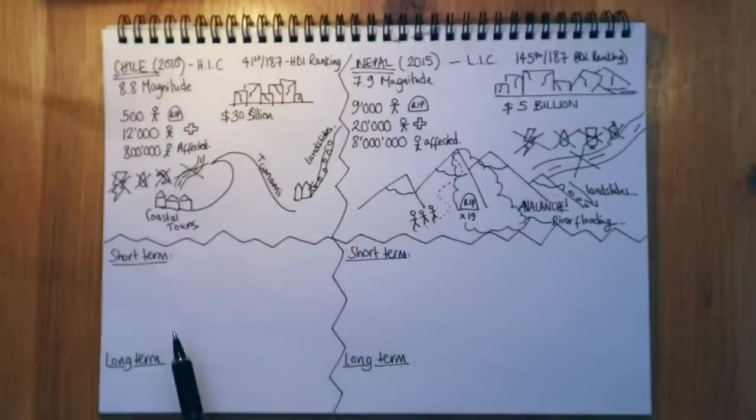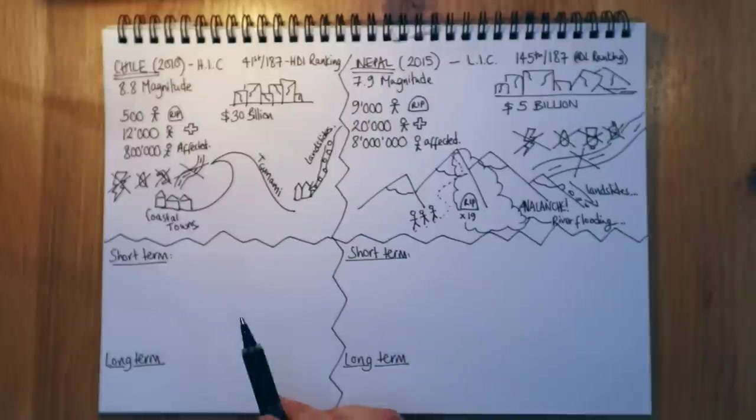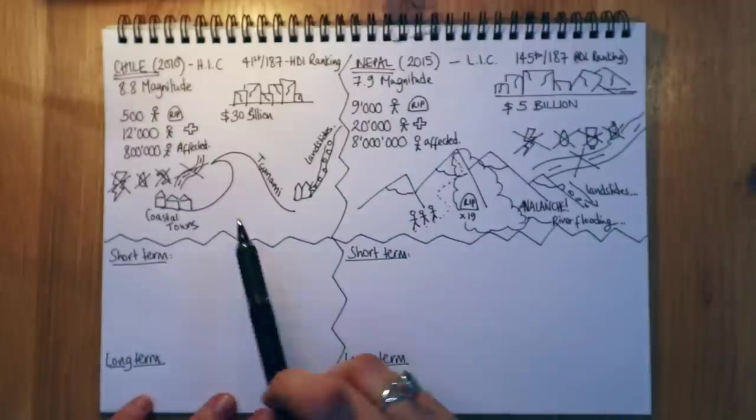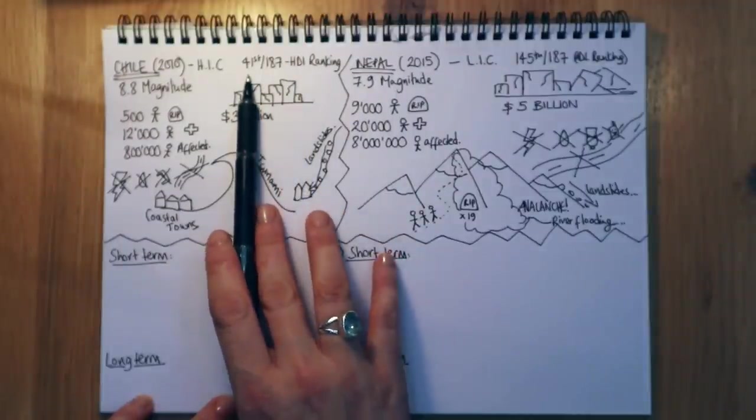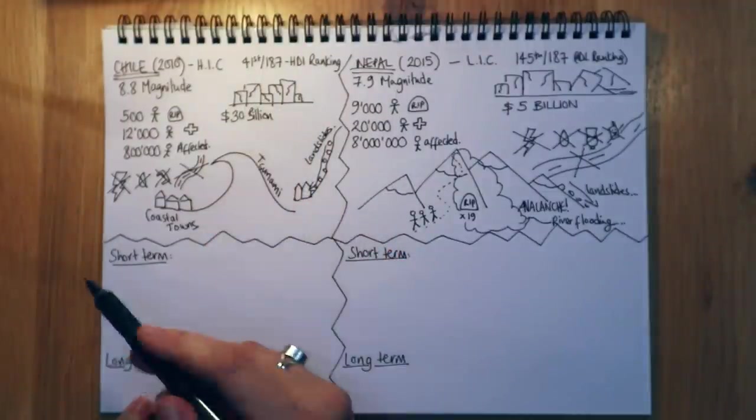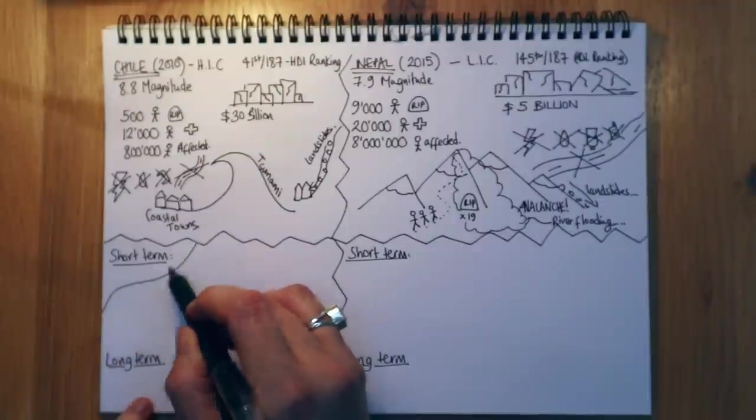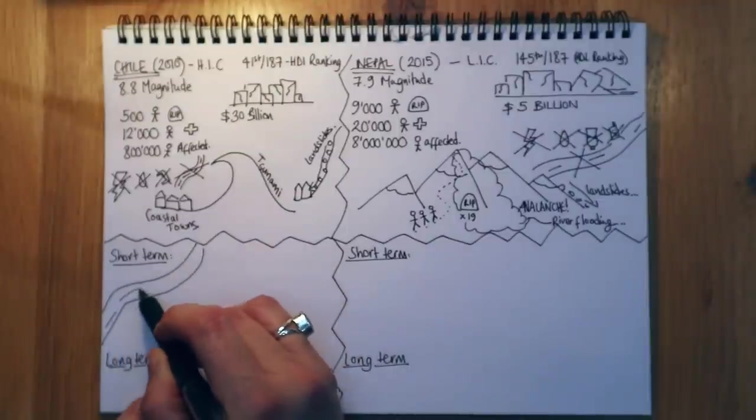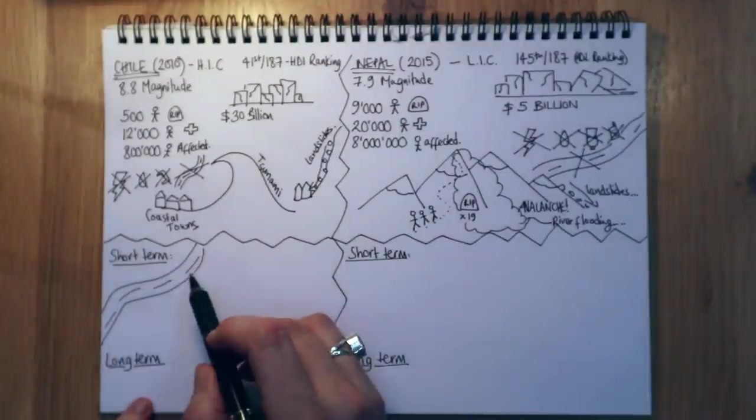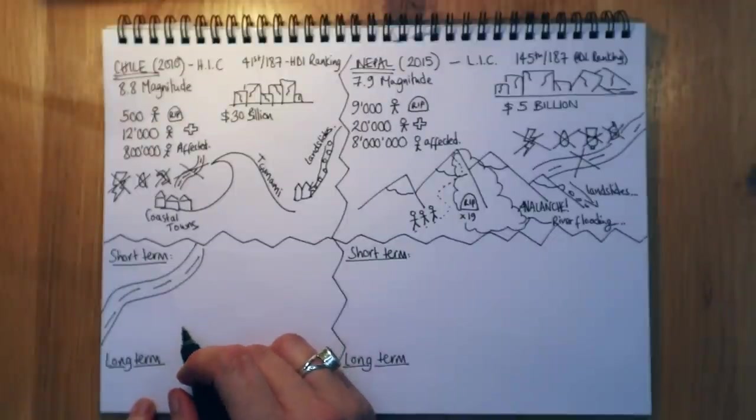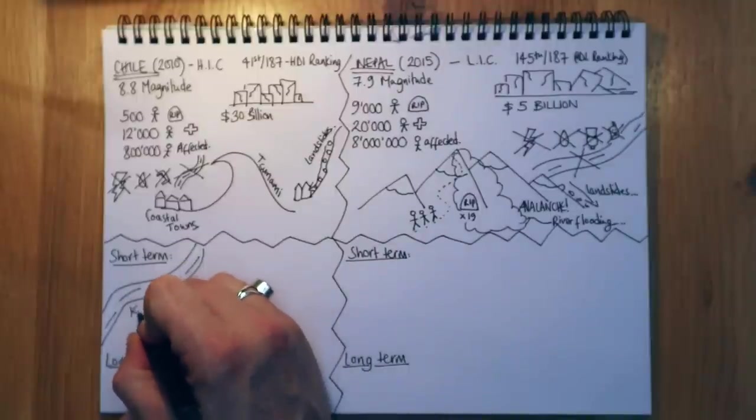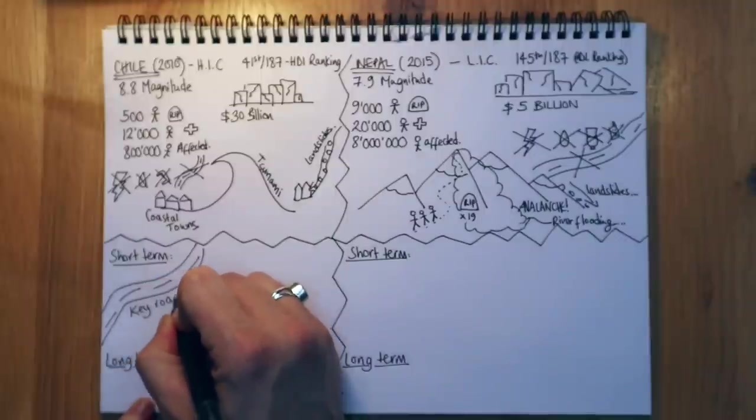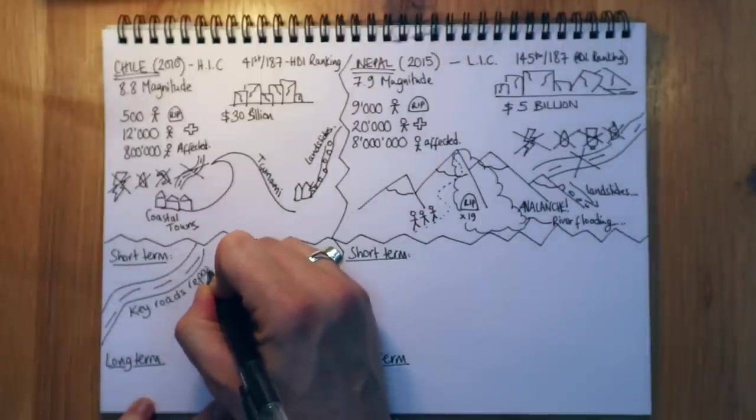So in the short-term, Chile basically responded much better. They had the wealth, the infrastructure. Remember that we're the 41st richest and better off country, more developed out of 187. So they were able to basically repair those roads that were damaged, which meant that they could get that much needed food, water, medicine, accommodation to people in need. And those key roads were actually repaired in just 24 hours.